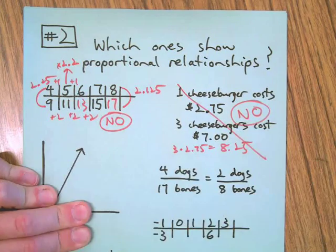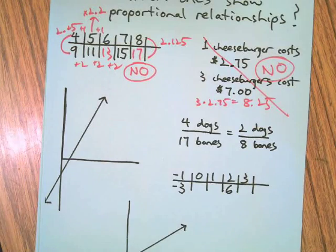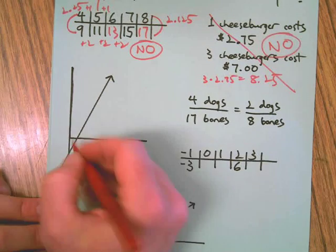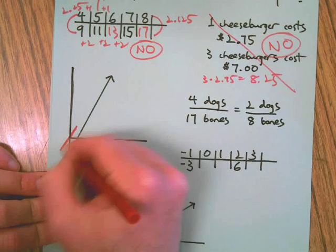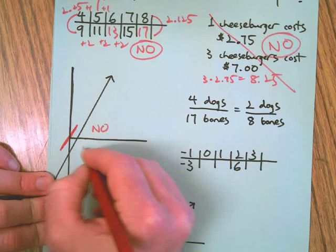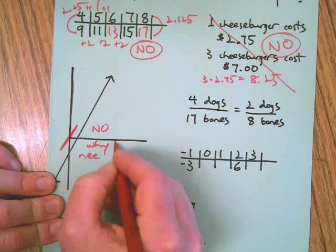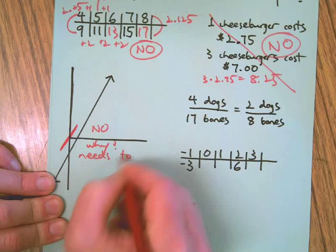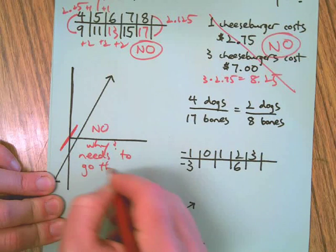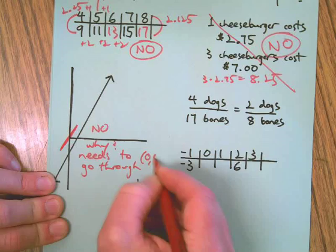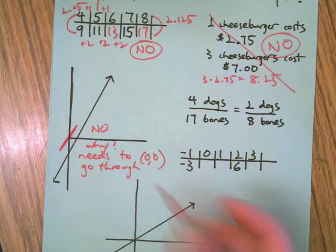This one is a no. Why? Because it needs to go through the origin, it needs to go through the origin, which is there. So if you're looking at a line graph and it does not go through the origin, it is not proportional.